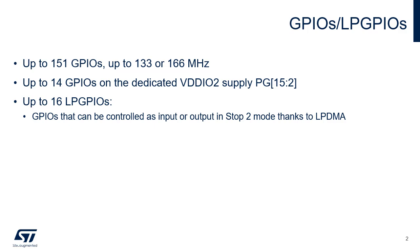Some input/outputs have the capability to increase their maximum speed at low voltage when configured in HSLV mode. They are identified by the suffix H in the datasheet. The IO-HSLV bit controls whether the input/output speed is optimized to operate at 3.3V (default setting) or at 1.8V (HSLV equals 1).